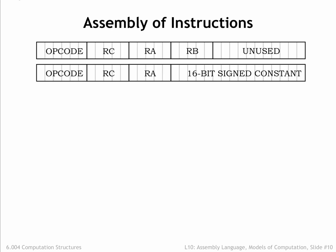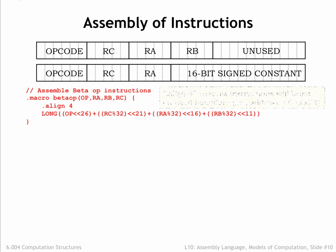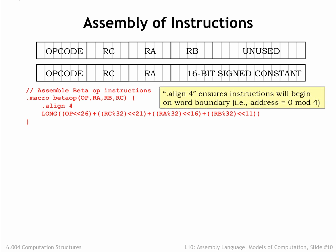Let's look at the macros used to assemble beta instructions. The beta-op helper macro supports the 3-register instruction format, taking as arguments the values to be placed in the opcode, RA, RB, and RC fields. The ALIGN4 directive is a bit of administrative bookkeeping to ensure that instructions will have a byte address that's a multiple of 4.